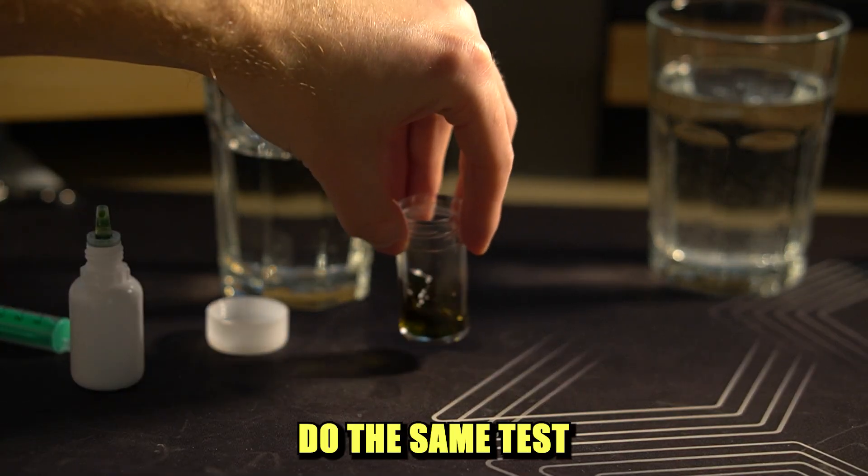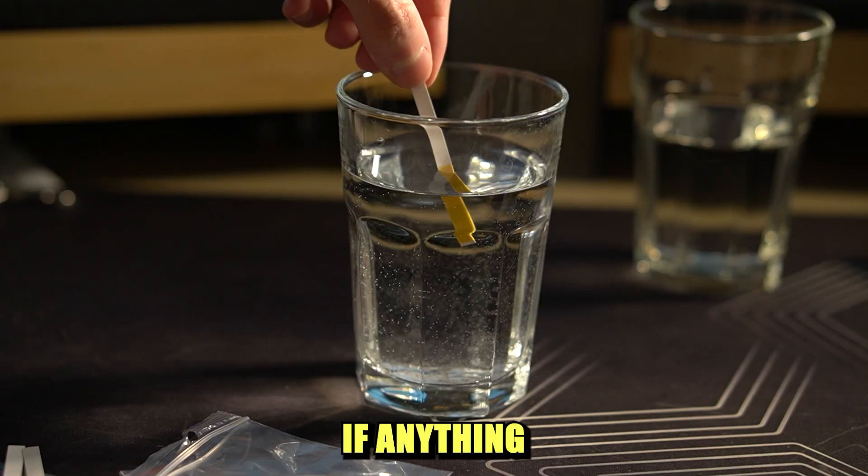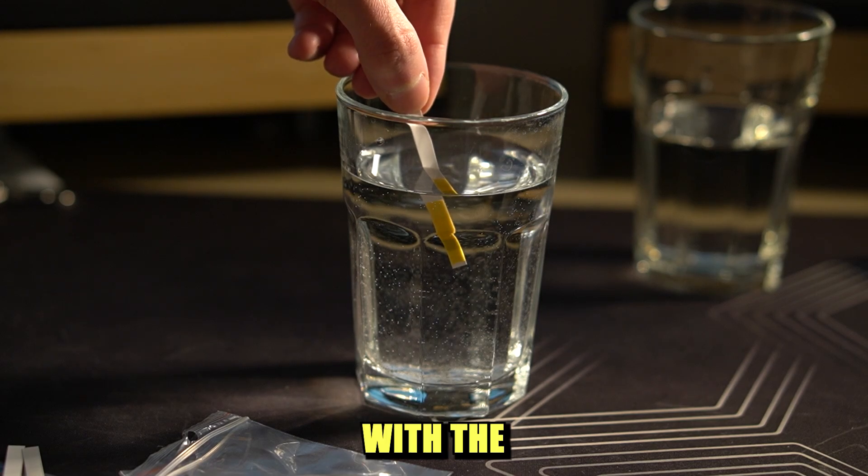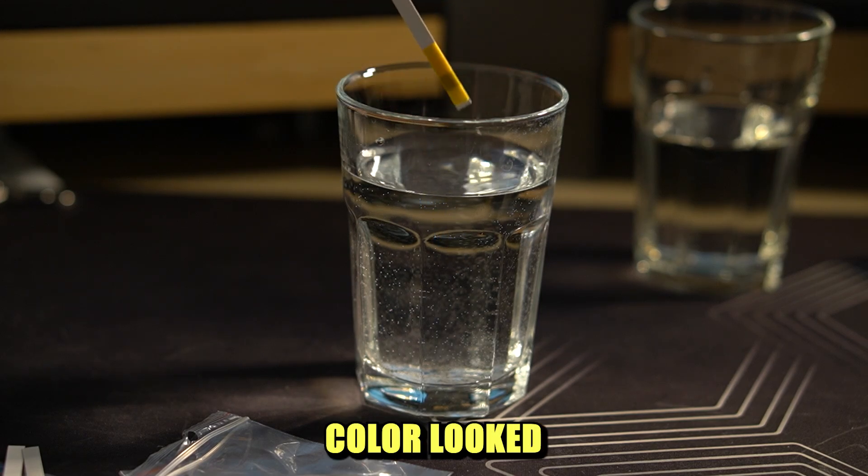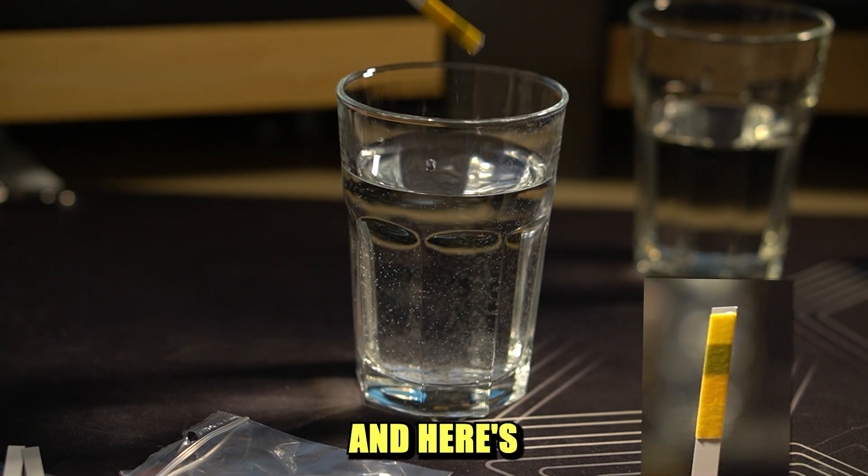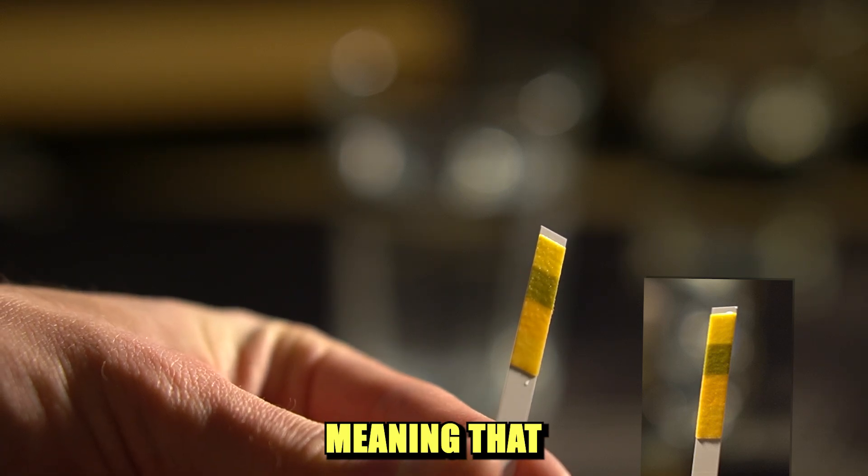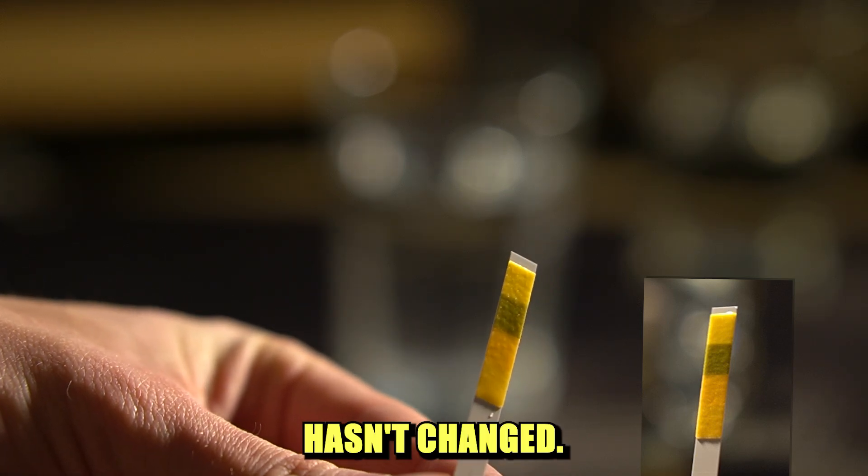Now, let's do the same test with the filtered water to see if anything has changed. Let's start with the pH level. The baseline color looked like this and here's what we got, meaning that the water pH level hasn't changed.